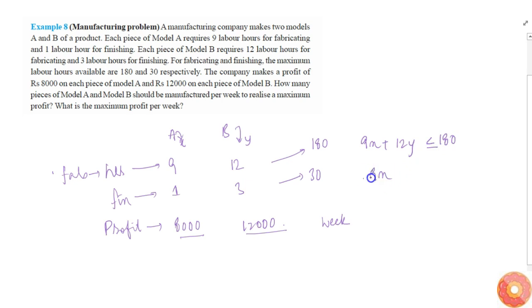Similarly, 1X plus 3Y less than or equal to 30. So we have one constraint: 3X plus 4Y less than or equal to 60, and another constraint: X plus 3Y less than or equal to 30. The profit function is P equals 8,000X plus 12,000Y.